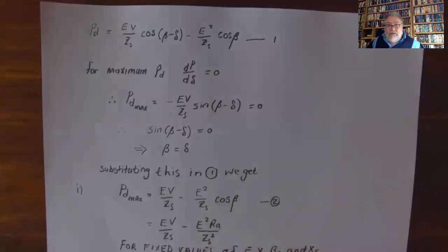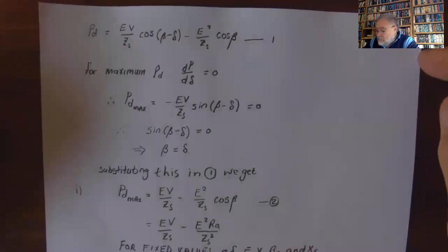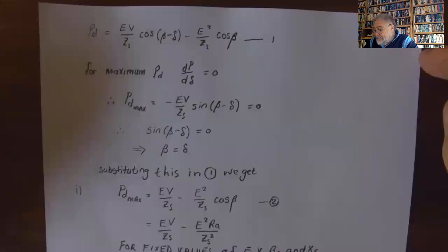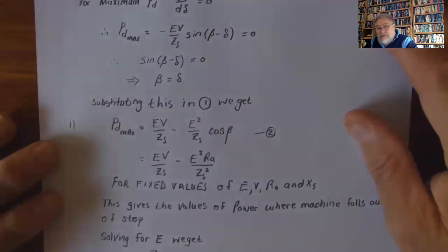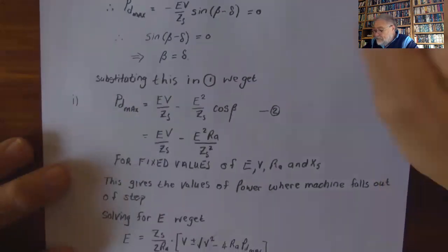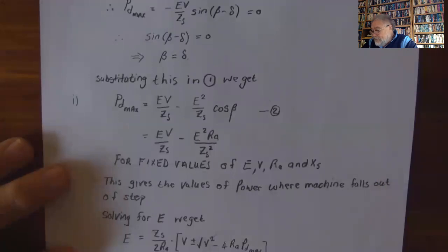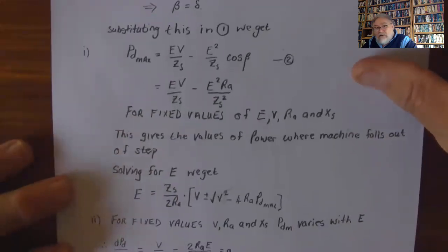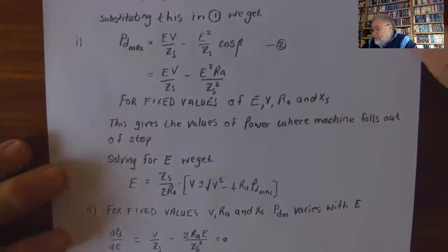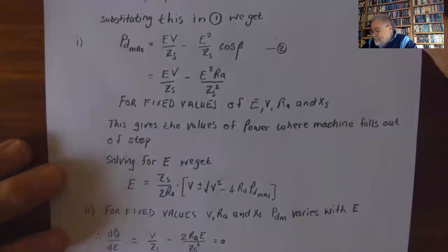The developed power is E V cos(beta minus delta) minus E squared over Z_s times cos beta. For maximum developed power, dP/d(delta) equals zero, which gives minus E V over Z_s times sin(beta minus delta) equals zero, and that happens when beta equals delta. Substituting back, we get E V over Z_s minus E squared Z_s over cos beta, and since cos beta is normally R_A over Z_s, we get E V over Z_s minus E squared R_A over Z_s squared.